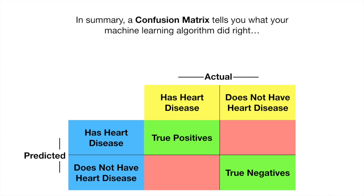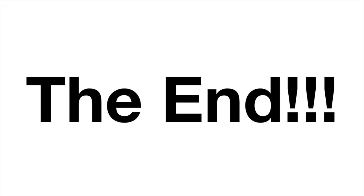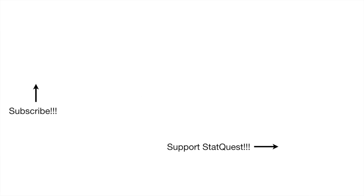In summary, a confusion matrix tells you what your machine learning algorithm did right and what it did wrong. Hooray! We've made it to the end of another exciting StatQuest. If you like this StatQuest and want to see more, please subscribe. And if you want to support StatQuest, consider buying one or two of my original songs. Alright, until next time, quest on!